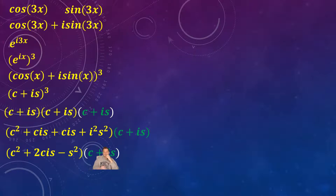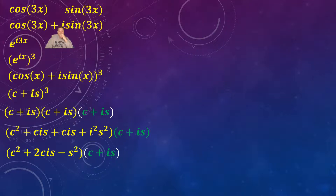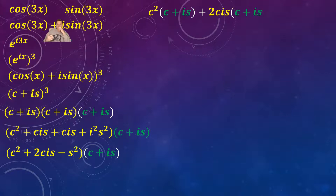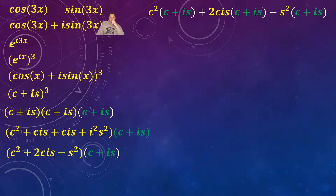The next goal is to multiply c plus i·s to each term of c squared plus 2c·i·s minus s squared, distributing basically. So it's going to look like c squared times (c plus i·s) plus 2c·i·s times (c plus i·s) minus s squared times (c plus i·s).